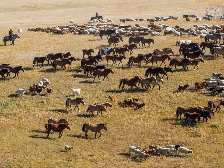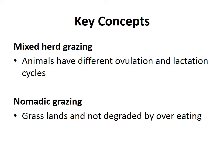The Mongols practise a kind of herding where they mix together all of these different animals. They'll move across the plain not as separate groups — sheep here, cows here, horses here — but all mixed in, as you can see in this photo. There are a number of advantages to that, which we'll come and talk about in a minute.